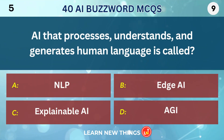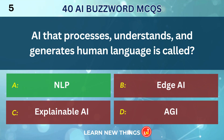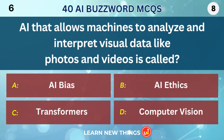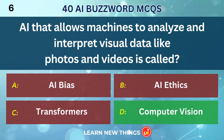AI that processes, understands, and generates human language is called NLP. AI that allows machines to analyze and interpret visual data like photos and videos is called Computer Vision.